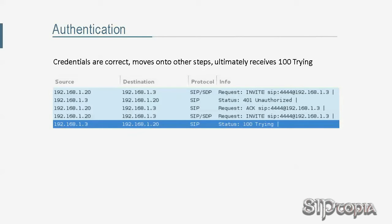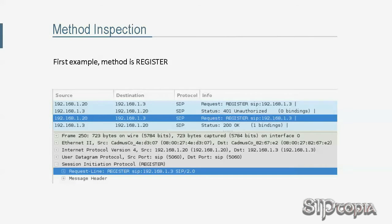Since the response is now a provisional 100 Trying, Tarzan's SIP phone was successfully authenticated. Similar to the REGISTER request before, please note that the request goes through several other steps before the UAS produces this 100 Trying response. The 100 Trying response is shown here just to indicate that authentication was successful.